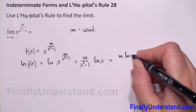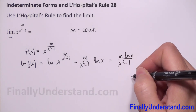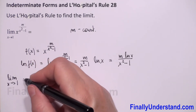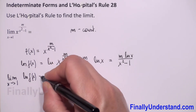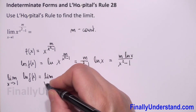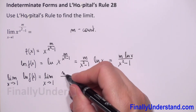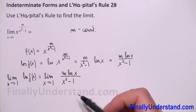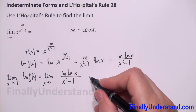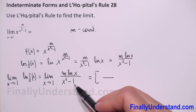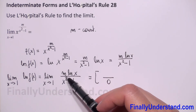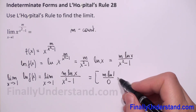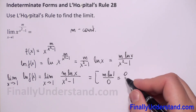This equals m times natural logarithm of x over x squared minus 1. So now we can write: limit as x approaches 1 of natural logarithm of f of x equals limit as x approaches 1 of m times natural logarithm of x over x squared minus 1. When x approaches 1, the denominator gives 1 squared minus 1 equals 0, and the numerator gives m times natural logarithm of 1 equals 0. So we have the indeterminate form 0 over 0.